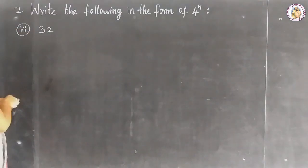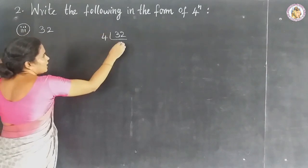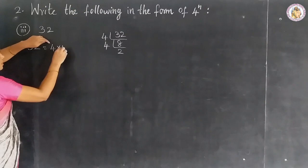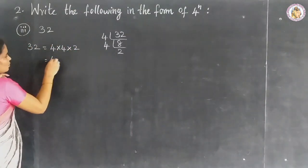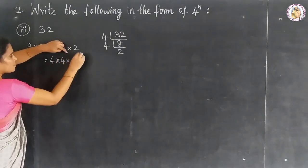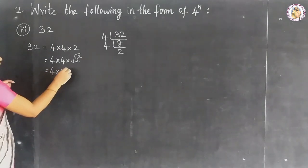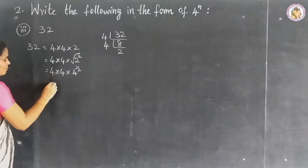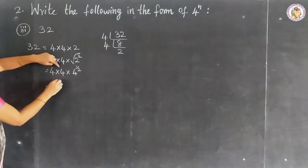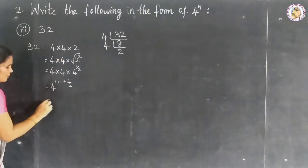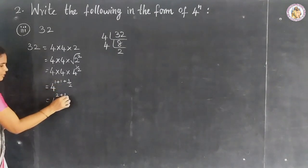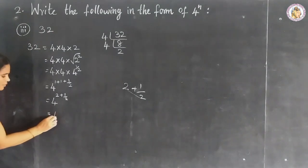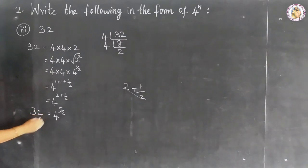Question number 3: 32. Taking LCM for 32 — 4 eights are 32, and 4 twos are 8. So 32 equals 4 × 4 × 2. Representing 2 as the square root of 2 squared, we get 4 × 4 × 4 to the power of 1 by 2. The base is 4, so we have 4 to the power of 1 plus 1 plus 1 by 2. Adding: 2 plus 1 by 2 equals 4 by 2 plus 1 by 2 equals 5 by 2. So 32 equals 4 to the power of 5 by 2.